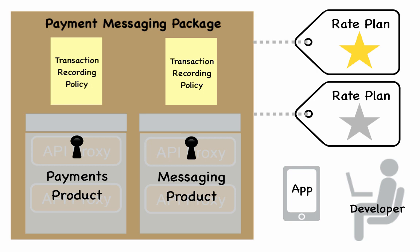And there you have it, a quick overview of the artifacts you'll need to create to monetize your APIs. Create your proxies, resources, and products. Then register your developers and their apps. Apply transaction recording policies to your products, and then package up your products and define your API business model using rate plans. Developers then sign up for the rate plans that best suit their app's needs. To learn more about Apigee and monetization, see the links provided.